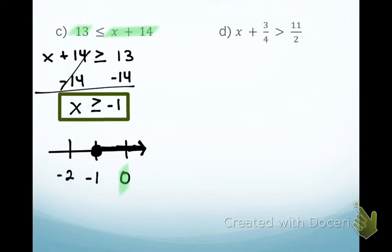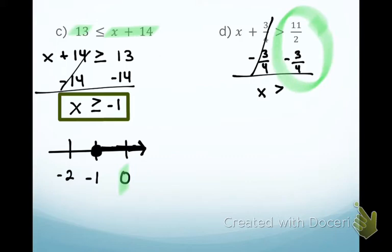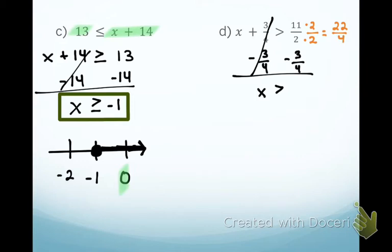Next problem: identify the variable — X. What is not allowing X to be alone? Add by 3/4. The opposite is subtract by 3/4 on both sides. This cancels out, and I'm left with X is greater than. When adding and subtracting fractions, we need the same denominator — a 4. Turn this 2 into fourths by multiplying top and bottom by 2, giving us 22/4. Then subtract 3/4. What is 22/4 minus 3/4? 19/4.